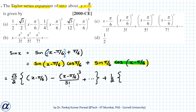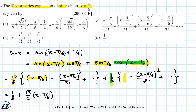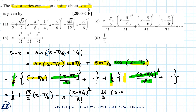Continuing, sin(π/6) = 1/2, and the series expansion of cos(x−π/6) = 1 − (x−π/6)²/2! + ... Arranging in increasing powers of (x−π/6), the first term is 1/2, the next is (√3/2)(x−π/6), then −(1/2)(x−π/6)²/2!, and −(√3/2)(x−π/6)³/3! + ... So the answer is correct.